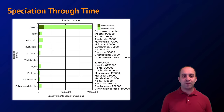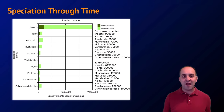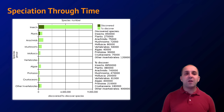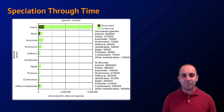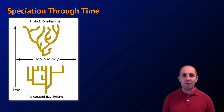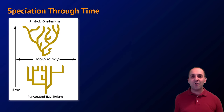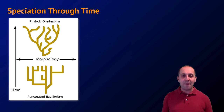Before we wrap up, let's talk briefly about speciation through time. This graph shows the number of discovered species and estimates of those that remain to be discovered — those estimates range all over the place, but it's thought that many species have yet to be discovered.